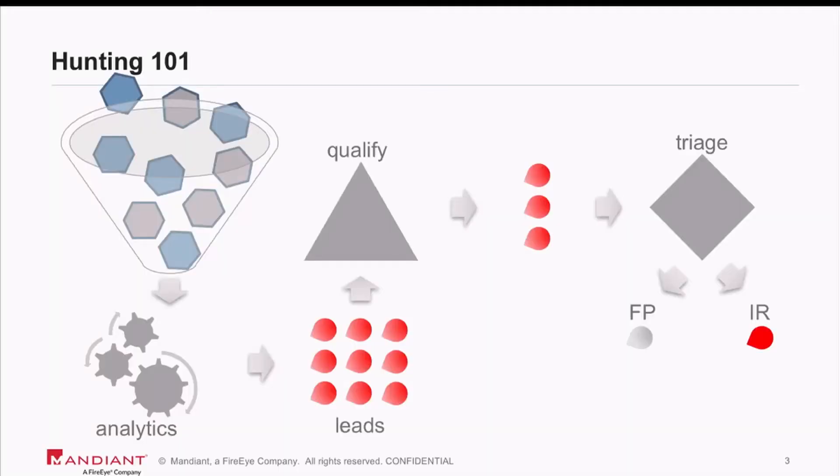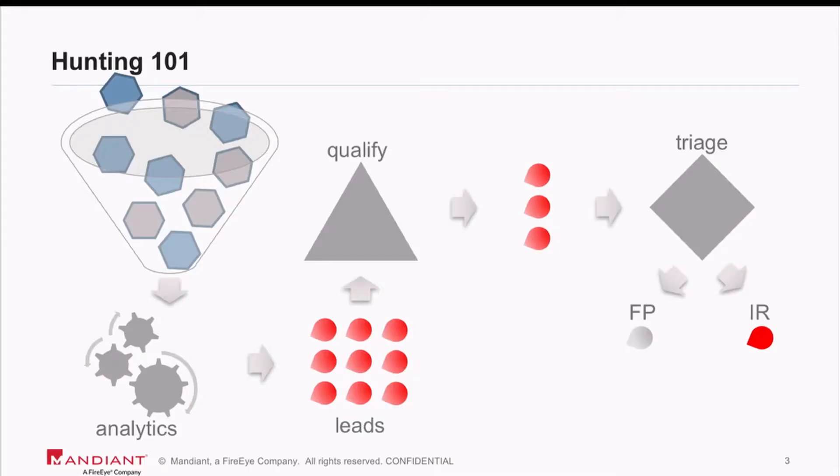Before we move on, a very quick hunting 101, because I want to put my finger on one specific aspect that has not been discussed yet. Textbook hunting: you select data sources, you throw them into your analytics — whatever those may be. Those will do their magic and spit out a set of leads. Then you have to qualify those leads, because all leads are not born equal. And then you triage — throwing that lead into a false positive bucket, which is going to be fairly large if you're doing threat hunting, or engaging your incident response protocols.